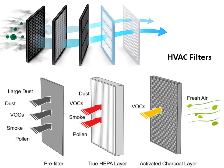In HVAC systems, filters are used to ensure the quality of indoor air. A single filter may not be sufficient, and a combination of filters may be required to filter various impurities like insects, large dust particles, fine dust, VOCs, smoke, and pollens. There may be pre-filters, HEPA filters (High Efficiency Particulate Absorbing/Air filters), and activated charcoal layers which trap VOCs, together ensuring indoor air quality.